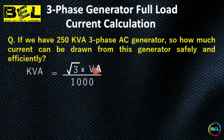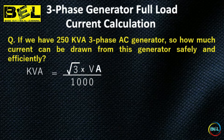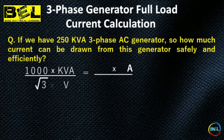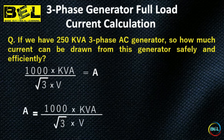We need to find the current A — that is our task. We will rearrange the formula for current calculation. Rearranging, the formula becomes: A = (kVA × 1000) / (√3 × V). So the formula for current is: A = (1000 × kVA) / (√3 × V).